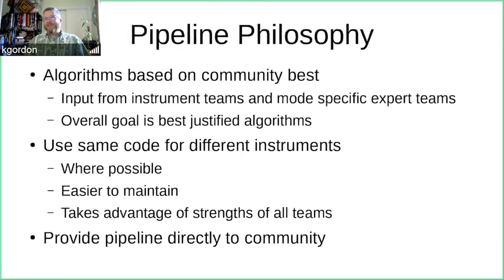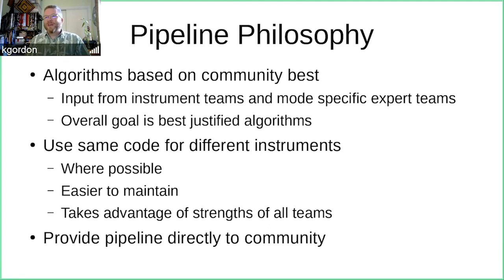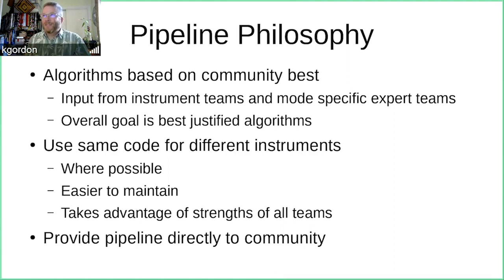What's the philosophy of the pipeline for JWST? The idea is to base the algorithms on community best practices. We took input from instrument teams and mode-specific teams, critically reviewed it, and tried to come up with the best approach. The overall goal is the best justified algorithms to produce the best data. Given that we're doing five instruments at once with a lot of commonality between them in detectors and observing modes.